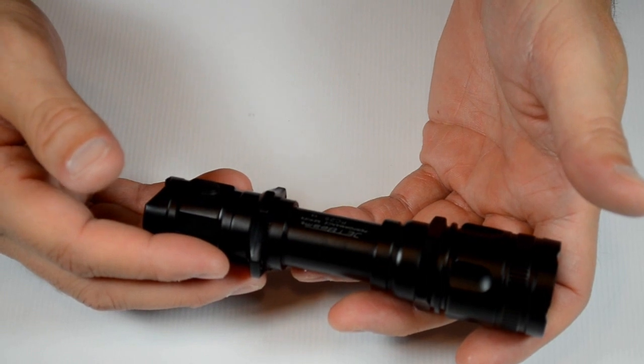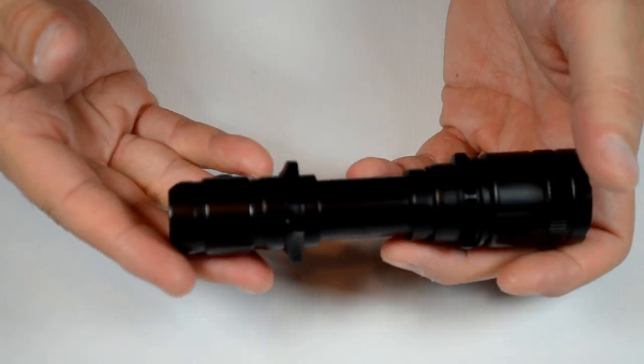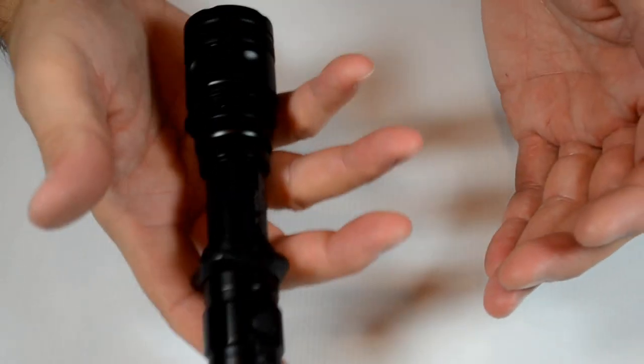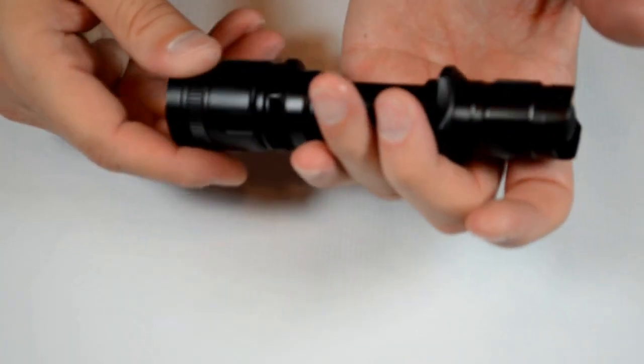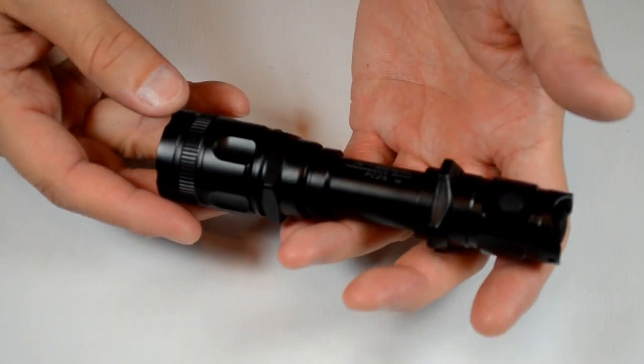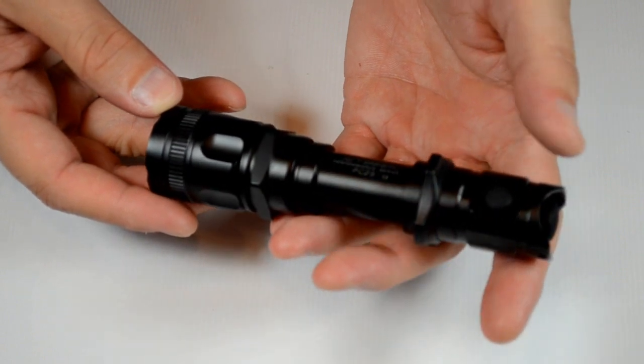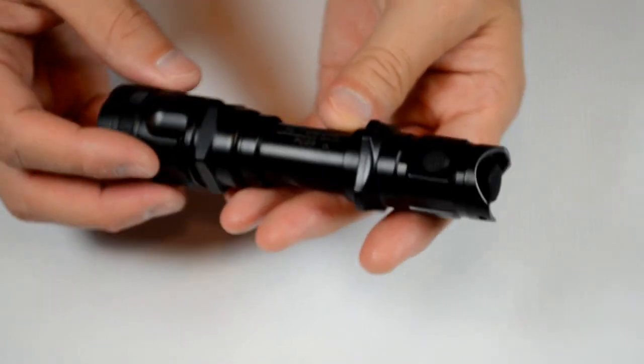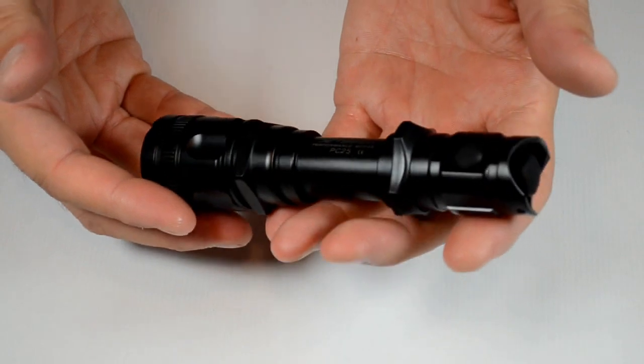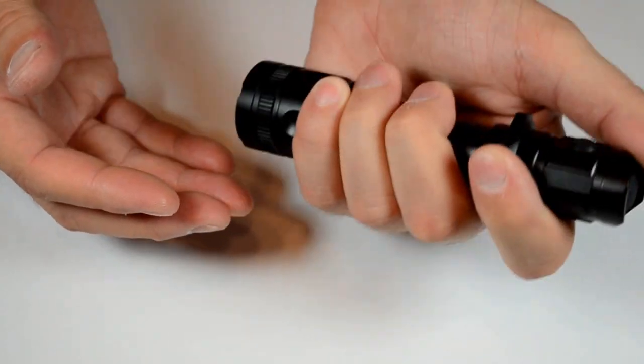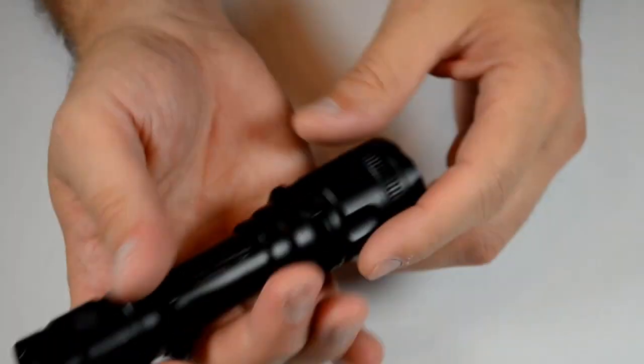It's also got a strobe. It's really easy to operate. The light feels nice in your hand. As you can see, as the current trend is, a lot of companies are making their lights smooth now with no knurling. This is one of them. It fits in your hand well.